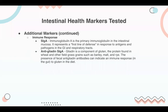Additional markers include secretory IgA and antigliadin secretory IgA. Immunoglobulin A is present in all mucous membranes and is the primary immunoglobulin in the intestinal mucosa, representing the first line of defense in response to antigens and pathogens in the GI and respiratory tracts. Antigliadin secretory IgA relates to gliadin — a component of gluten found in wheat, barley, rye, and malt. The presence of antigliadin antibodies can indicate an immune response in the gut in response to gluten in the diet, and can reflect different responses to food sensitivities and environmental exposures.